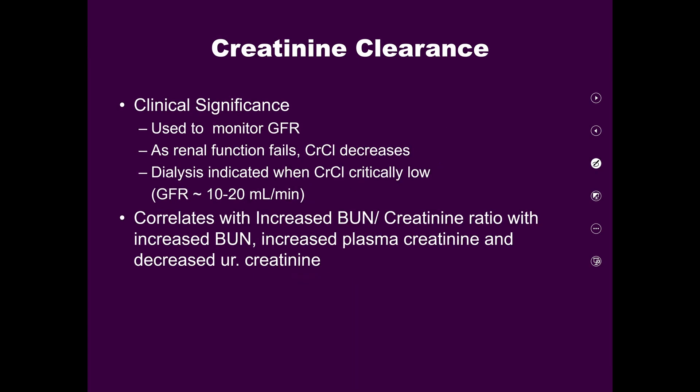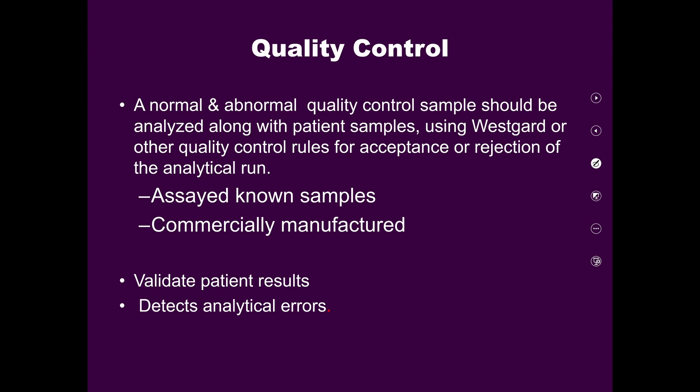The clinical significance of creatinine clearance is that it is used to monitor GFR. As renal function decreases, creatinine clearance decreases. Dialysis is indicated when eGFR is less than 10 to 20 ml per minute. It also correlates with an increased blood urea creatinine ratio. A normal and abnormal quality control sample should be analyzed along with patient samples using Westgard or other QC rules for acceptance or rejection of an analytical run.